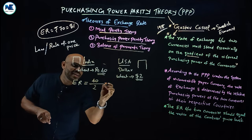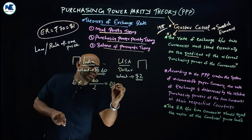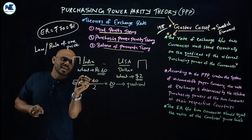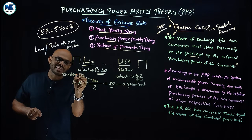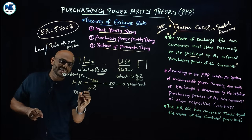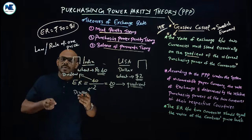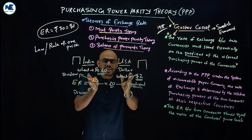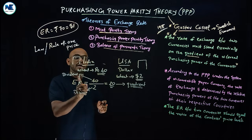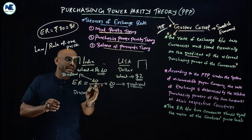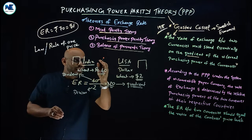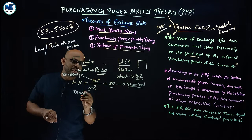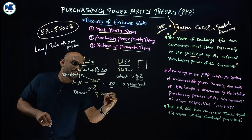The calculation is: 40 divided by 2 equals 20. So the exchange rate is Rupees 20 equals Dollar 1. That means you need Rupees 20 to purchase one Dollar — this is the exchange rate as per Purchasing Power Parity theory.